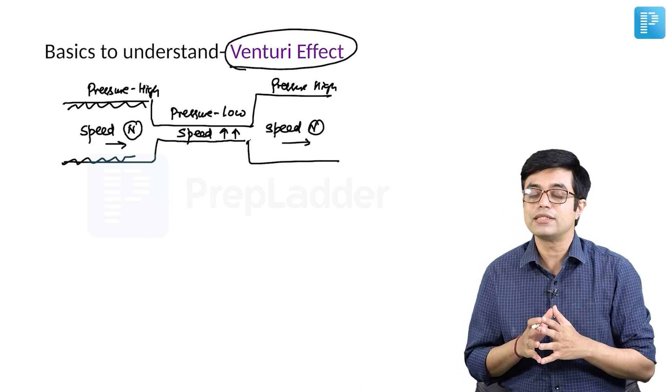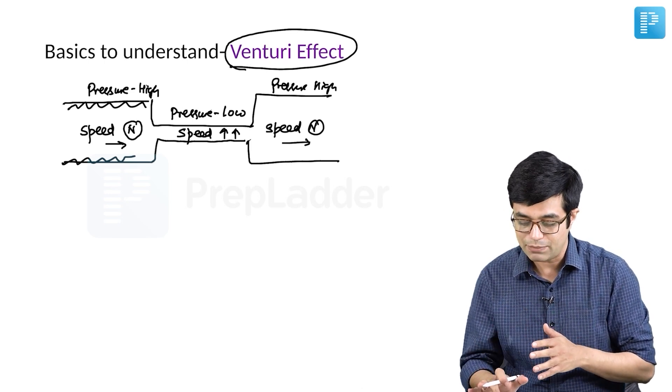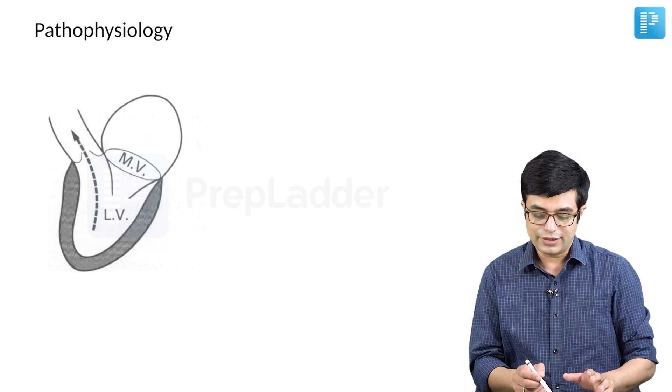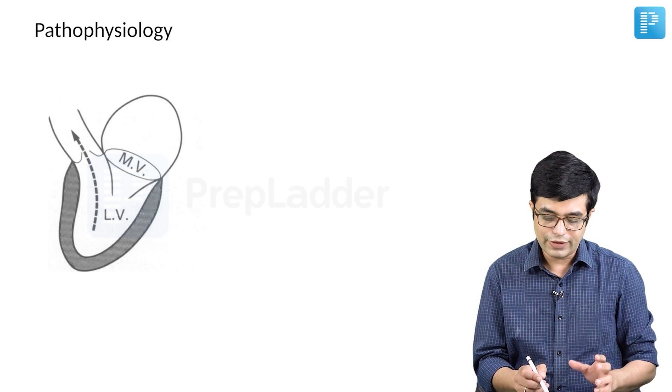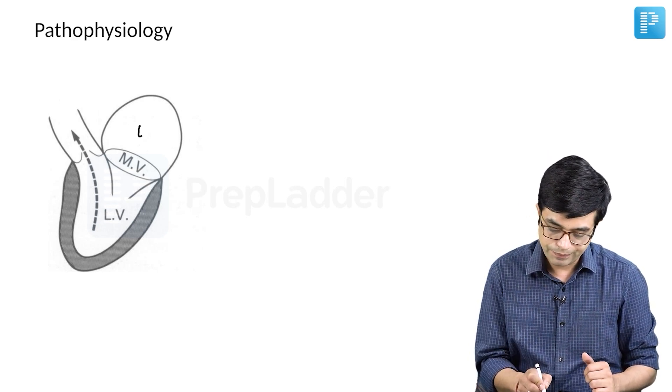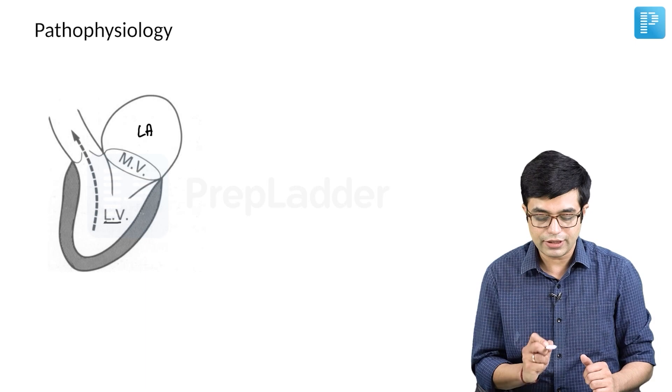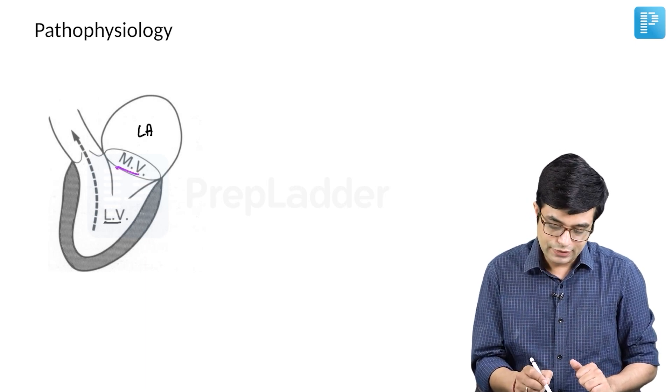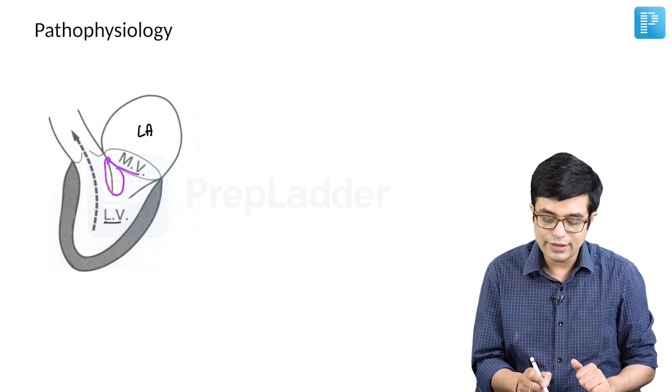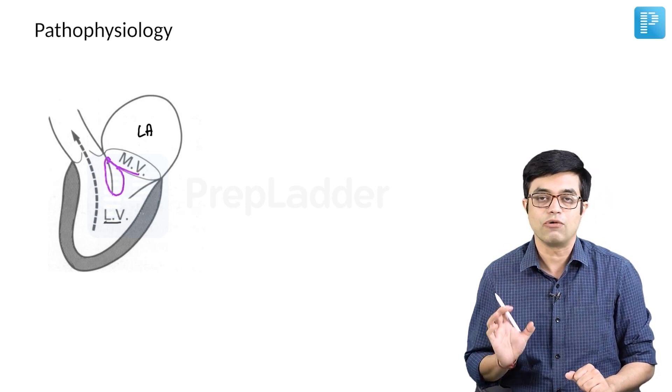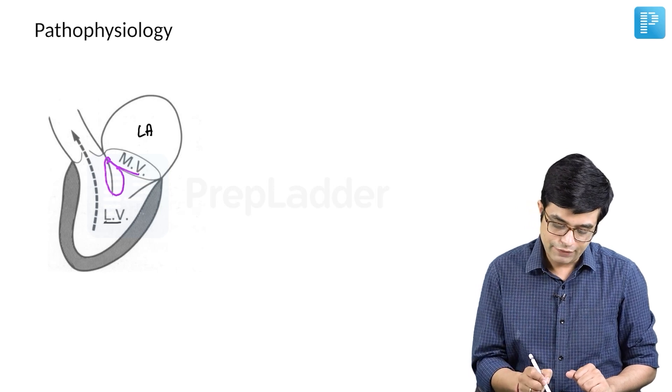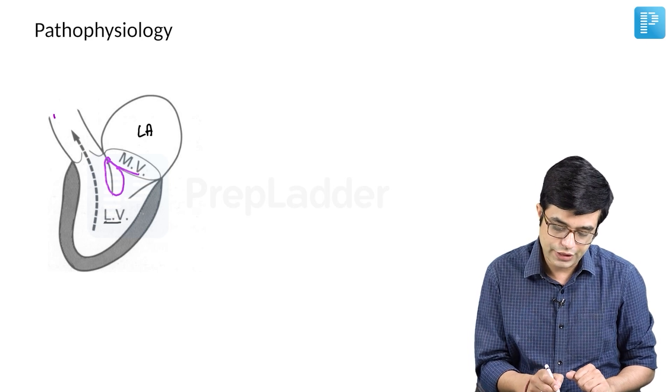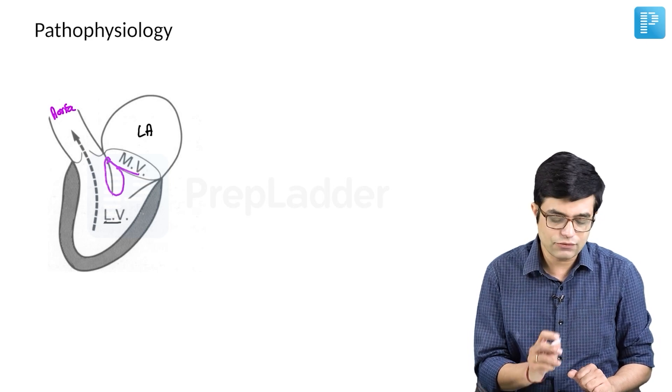Let us try to understand this Venturi effect. What exactly is happening? Look at this diagram. As you can see, this is a normal heart. Whenever LV contracts, this is your left atrium, this is your left ventricle and this is the mitral valve. This part is called as the anterior leaflet of mitral valve. Whenever LV contracts, this aortic valve opens and blood moves into the aorta. This is what normally happens.